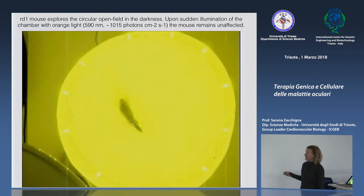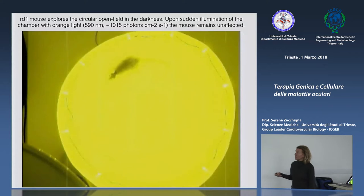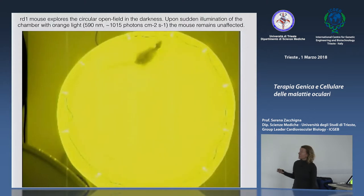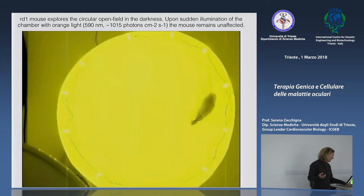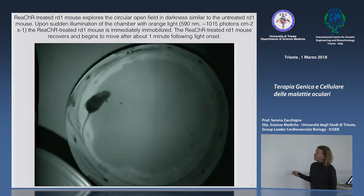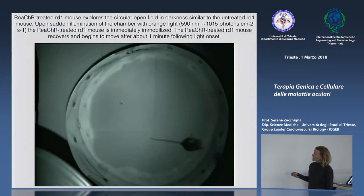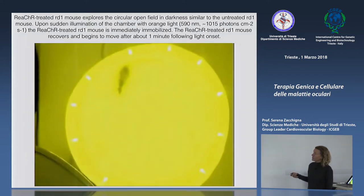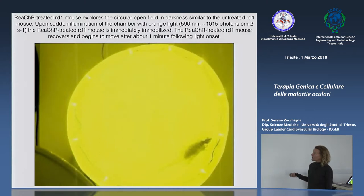Il topo cieco continua nel suo movimento casuale. Lo stesso ceppo murino trattato con un vettore AAV che esprime la channel rhodopsin nelle cellule ganglionari retiniche acquisisce invece una risposta alla luce: quando arriva lo stimolo luminoso si mobilizza, mostrando una reazione molto diversa dai controlli non trattati, con anche una sorta di adattamento alla luce e un riflesso di paura verso qualcosa che non aveva mai sperimentato.